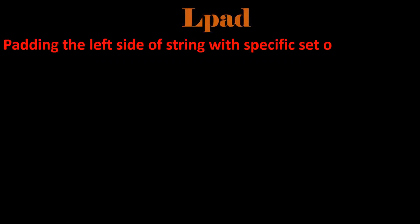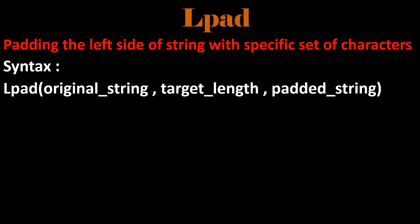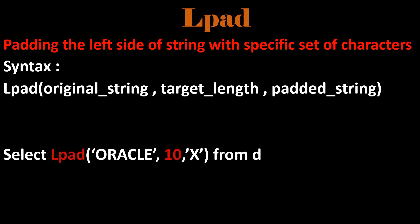Next one is LPAD. LPAD is the function which is used to pad the left side of the string with a specific set of characters. The syntax is: original string, the target length, and the padded string. For example, if we have a six-character string and we want the target length to be 10, and it doesn't match, we pad the left side with 'X'. The result will have four X's on the left, so the total length of the string will be 10.